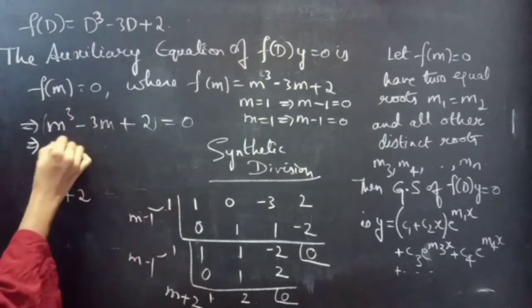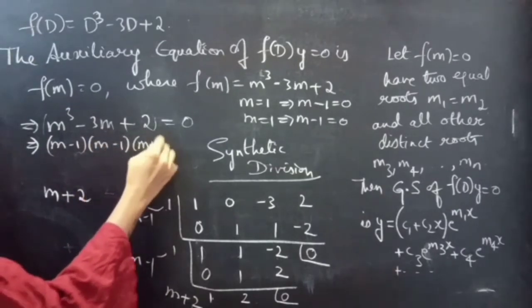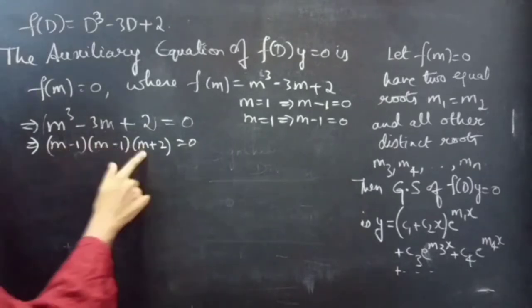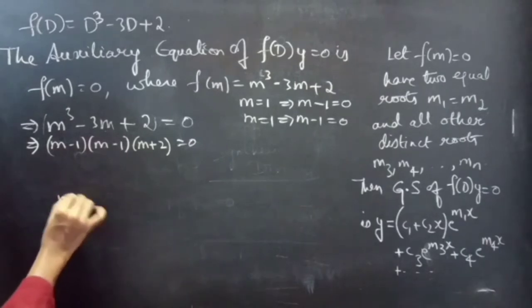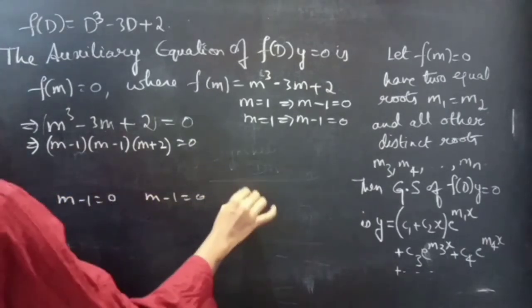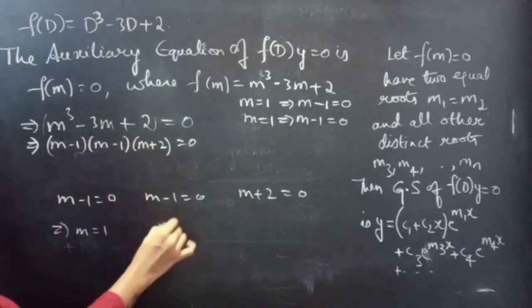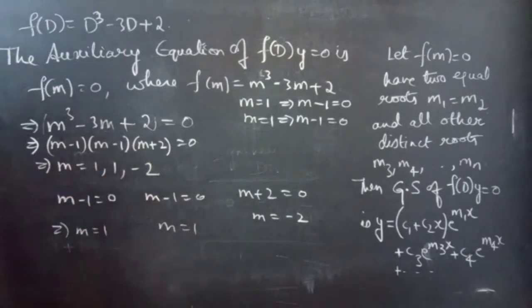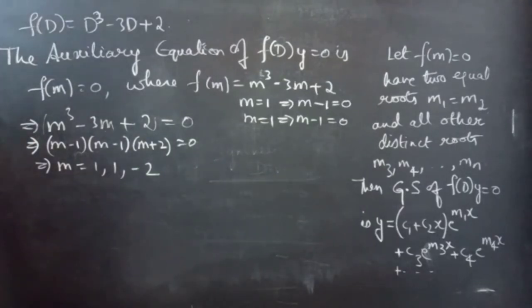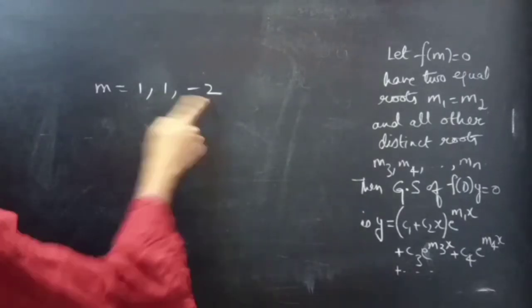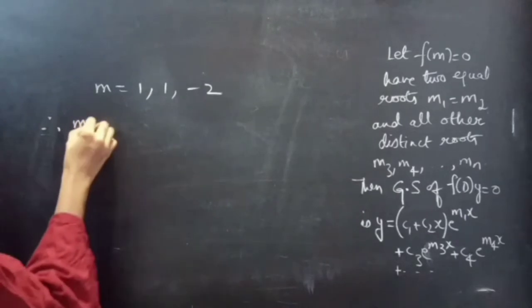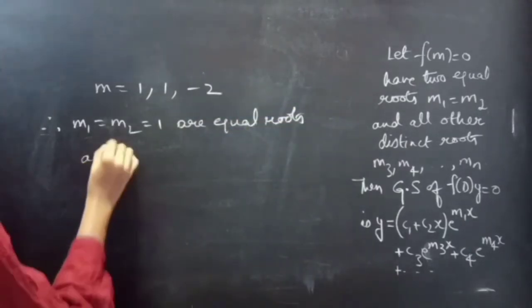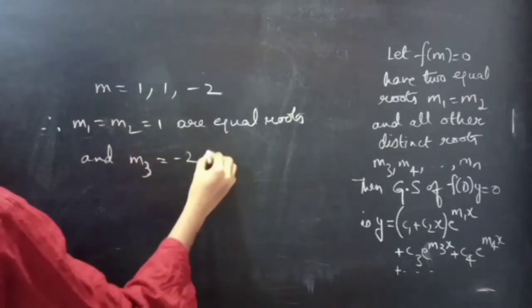So we can write this polynomial as (m minus 1)(m minus 1)(m plus 2) equals to 0. We have three factors. Equating each to zero: m minus 1 equals 0 gives m equals 1; m minus 1 equals 0 gives m equals 1; m plus 2 equals 0 gives m equals minus 2. So the roots are m equals 1, 1, and minus 2. Here 1 is a repeating root. We have two equal roots and one distinct root. Therefore m1 equals m2 equals 1 are equal roots, and m3 equals minus 2 is a distinct root.